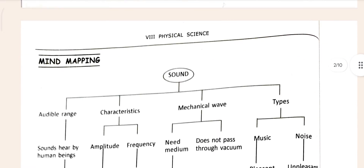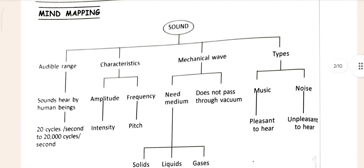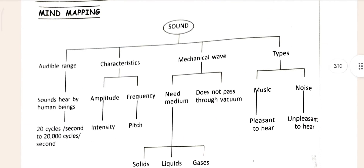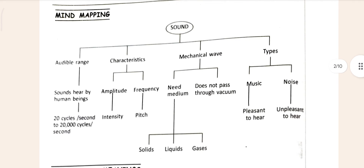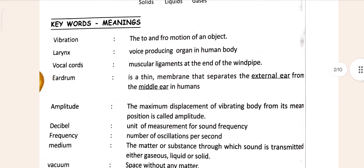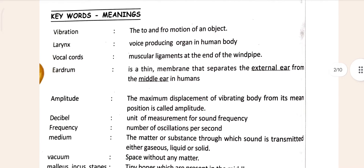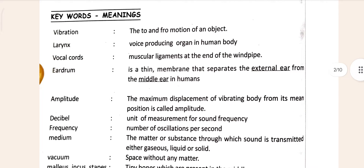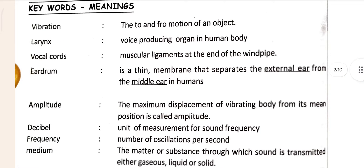After that, you can come to the mind mapping. Mind mapping is very important to understand the chapter we are going to read. That's why it's important. After it, see the key words meaning. In this section, key words meaning is given.